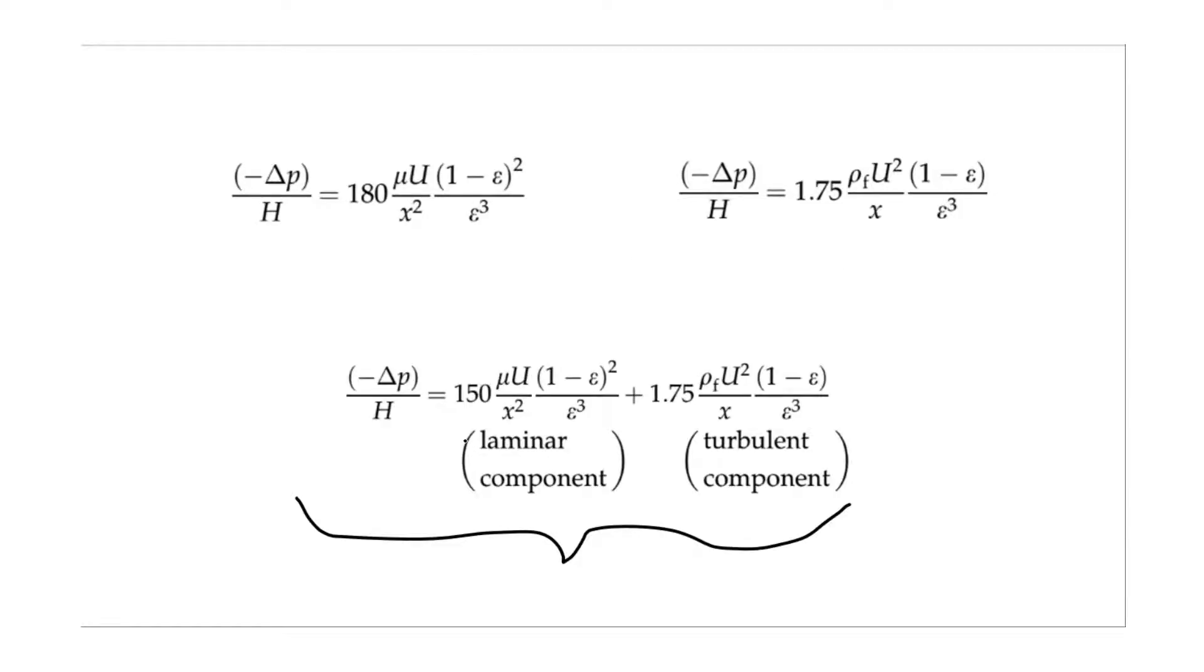However, the coefficient for the laminar section has been decreased. This is because it is a general equation that can be used for either the turbulent or the laminar, and the decrease of the coefficient is offset by the turbulent section of the equation.